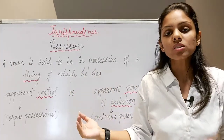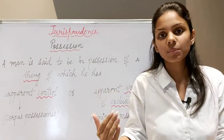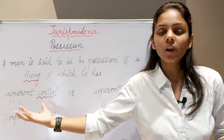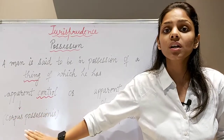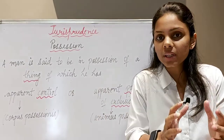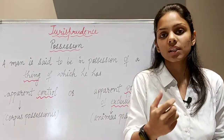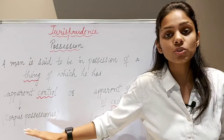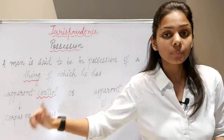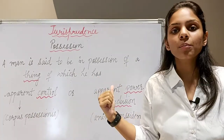Exclusion ka matlab hai excluding other people — world at large — external interference ko khatam kar sakti hoon. Yahan pe meri paas is cheez ki physical custody hai, control hai — matlab meri paas us cheez ka physical element hai. Agar hum possession ke physical element ko dekhen, hum log corpus kehte hain — this is called corpus possessionis. This apparent control is the physical element of possession. And this apparent power of excluding others is the mental element of possession.